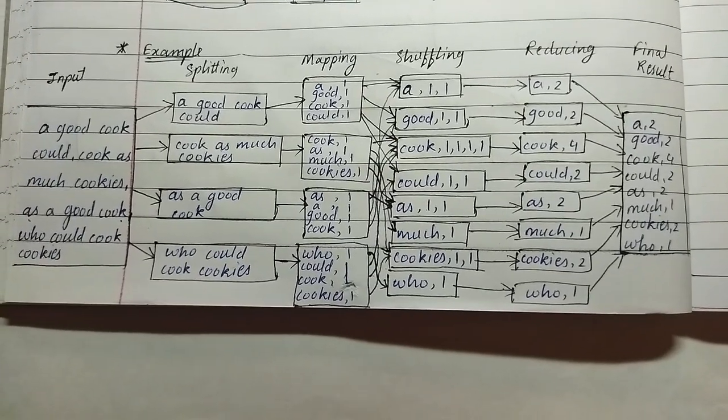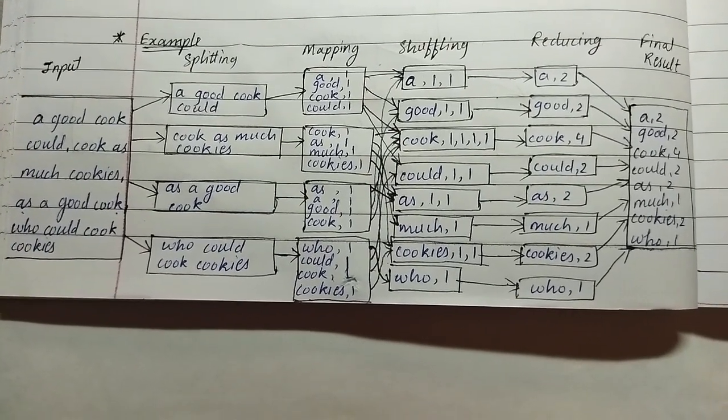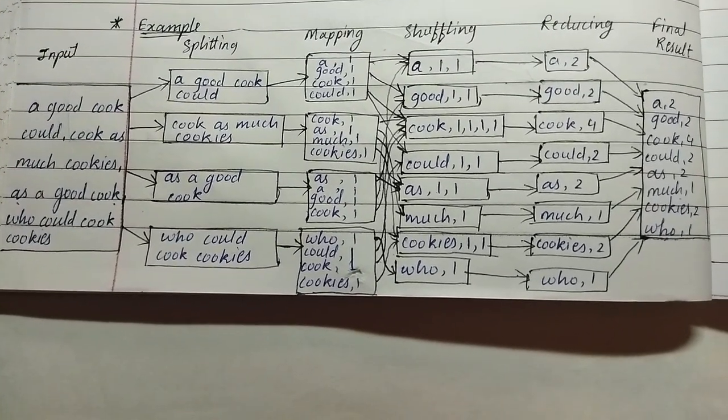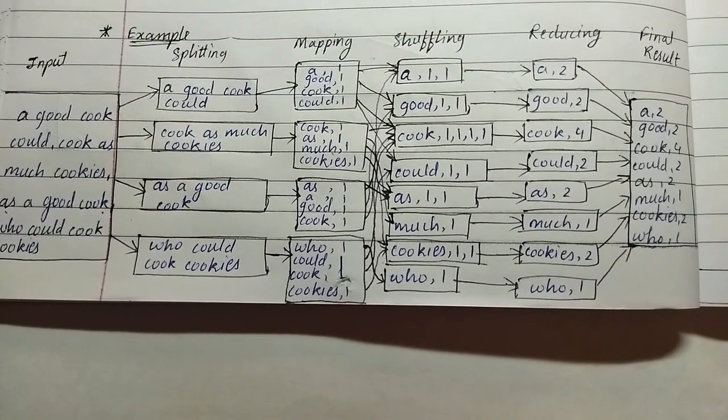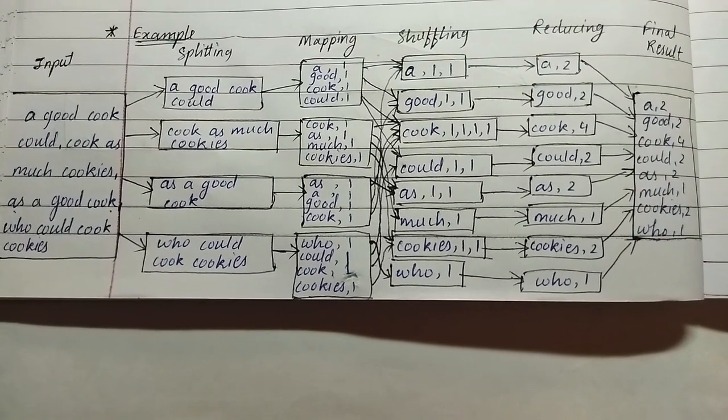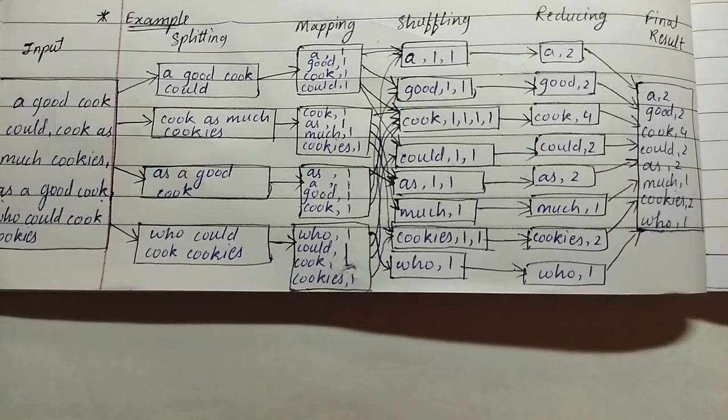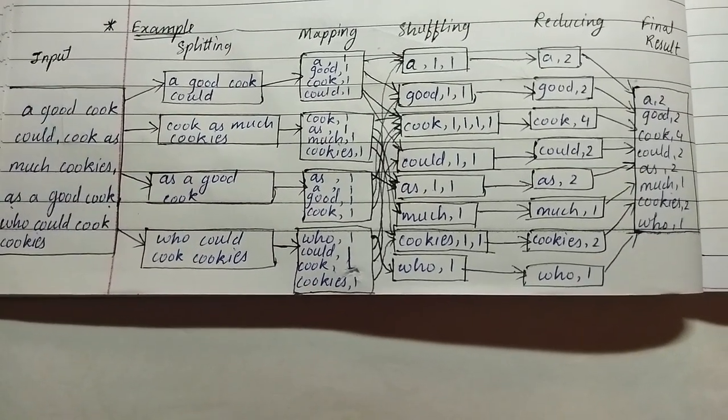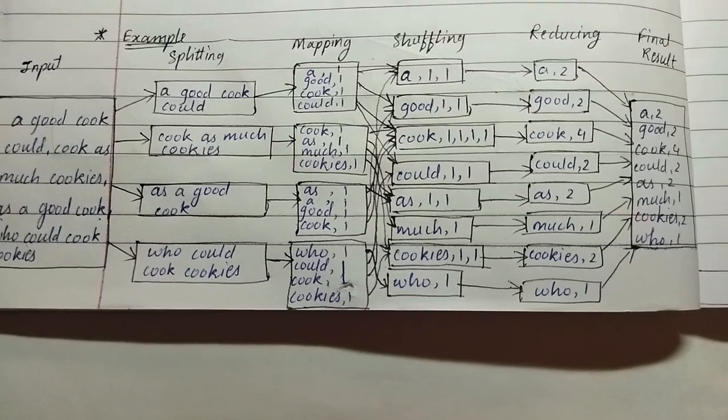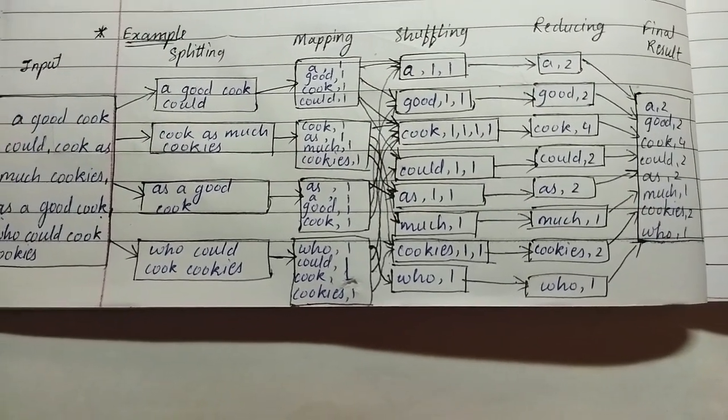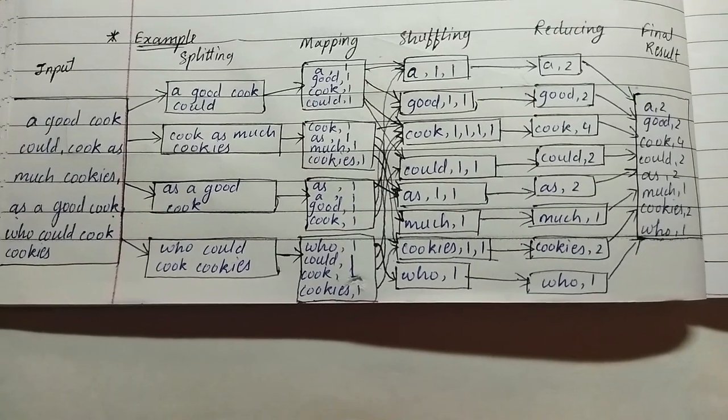This is an example of MapReduce. First, an input is given: there are four sentences - "a good cook could", "then cook as much cookies", "as a good cook", and "who could cook cookies". Then after splitting that whole input: "a good cook could", "then cook as much cookies as a good cook", and "who could cook cookies".